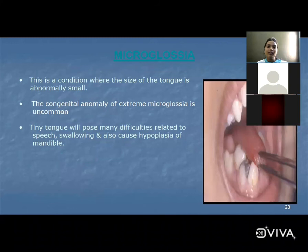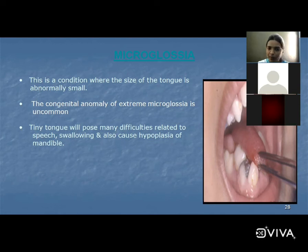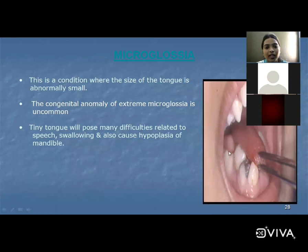Microglossia is a condition where the size of the tongue is abnormally small — a very rare congenital anomaly. It causes speech defects, swallowing defects, and also causes hypoplasia of the mandible because there is a lack of muscular stimuli and lack of transverse dental arch development, leading to malocclusion problems.